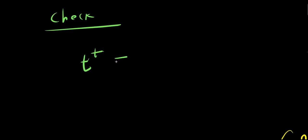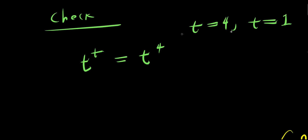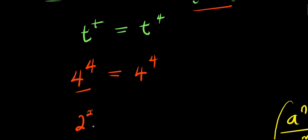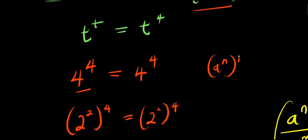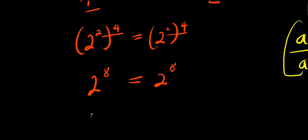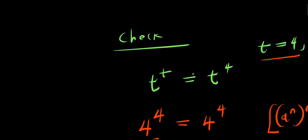Now let's verify both solutions in t to the power of t equals t to the power of 4. Checking t equals 4: 4 to the power of 4 equals 4 to the power of 4. Since 4 equals 2 squared, this becomes 2 squared raised to the 4th equals 2 squared raised to the 4th, which gives 2 to the power of 8 equals 2 to the power of 8, or 256 equals 256. Left-hand side equals right-hand side, so t equals 4 is confirmed.